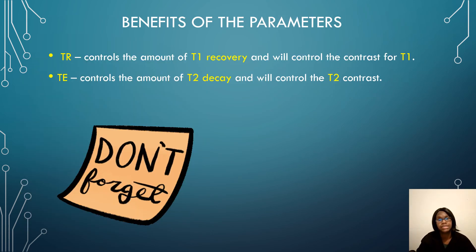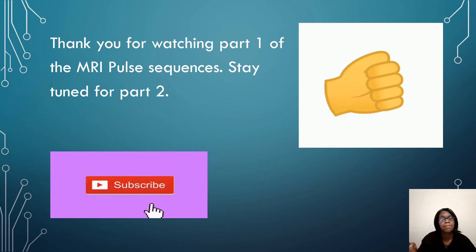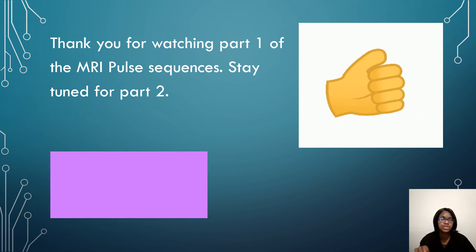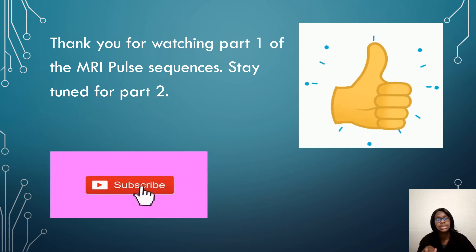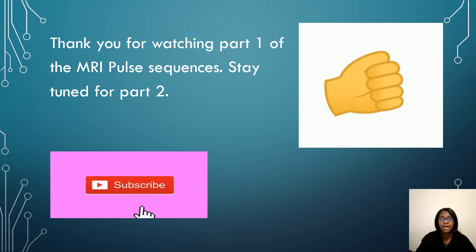The TR controls T1 recovery and controls the contrast for T1. The TE controls T2 decay and controls T2 contrast. That is it for part one of MRI pulse sequences. I will make a part two because pulse sequences are long and you have to draw them out to understand — you can't rush through it. Stay tuned for part two, and I will see you all in the next lesson. Thank you all for watching.